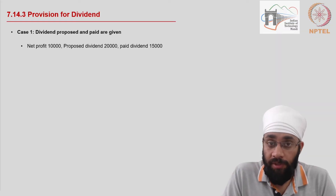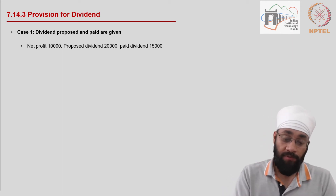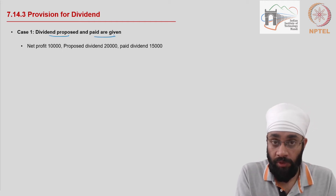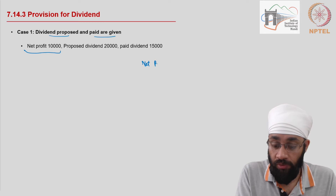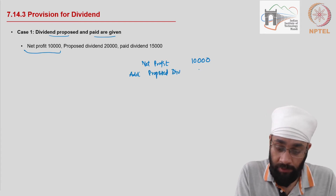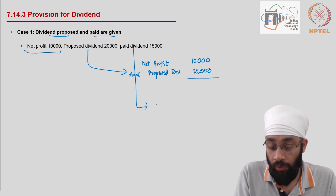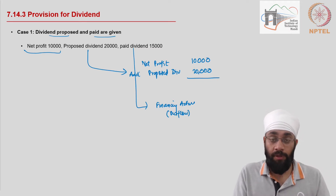In this video we are going to talk about the proposed dividend and the dividend expenses which are actually made during the year. We will look at three cases. Case one: the proposed dividend amount and the paid dividend amount is given. You have a net profit of 100, so in the first section where you show the profit during the year, you add to it the proposed dividend of 20,000. The paid dividend goes to the financing activities as an outflow.